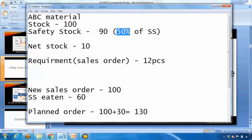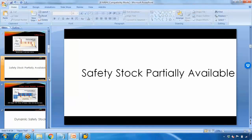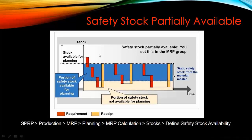So if we allow 50% consumption, that means if a sales order arrives for up to 45 pieces, the system will consume from safety stock. If a sales order of 46 pieces or above arrives, the system will generate new planned orders. Looking at the previous slide, for standard safety stock the safety stock is never consumed — every requirement generates a new receipt or planned order. But with partial availability, the system can consume the defined portion of safety stock.